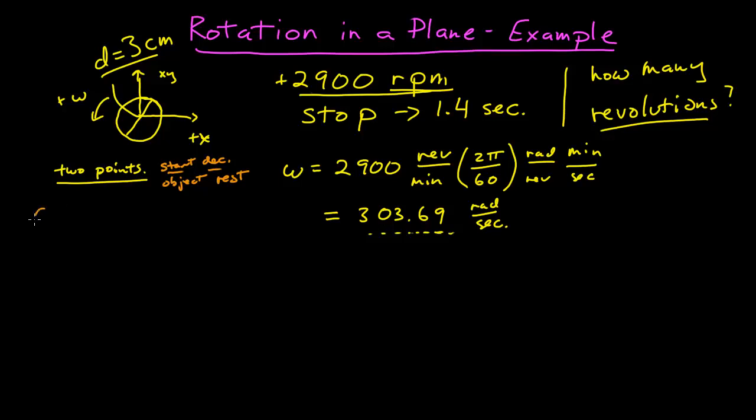Let's identify what we know. Our initial angle, we get to choose our coordinate system and origin, so I'm going to choose the initial angle to be zero. Then there's some final angle where that axis ends up when the object finally comes to rest, which is unknown.